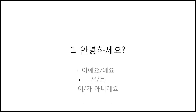These three grammatical factors are 이에요 and 예요, 은/는, and 이가 아니에요. 이에요 and 예요 is the 'be' verb — 'am,' 'is,' 'are' in English. 은/는 is attached after the subject of the sentence; it is a subject particle. And 이가 아니에요 is the negation of the 'be' verb — 'am not,' 'aren't,' 'is not.'